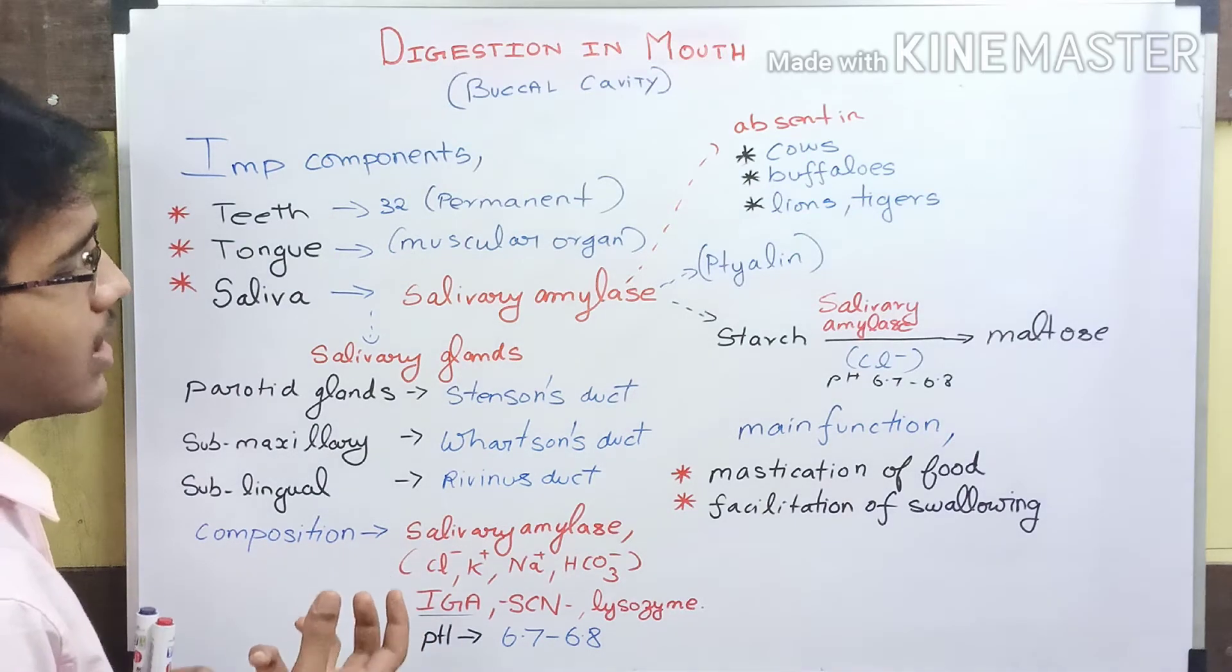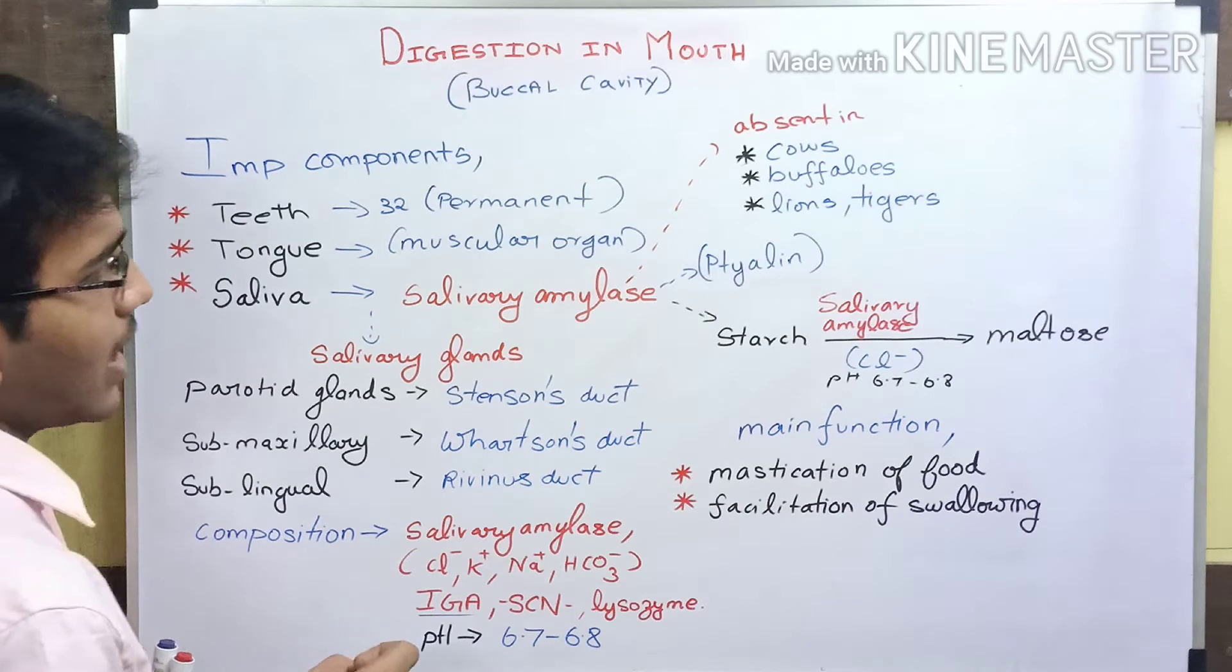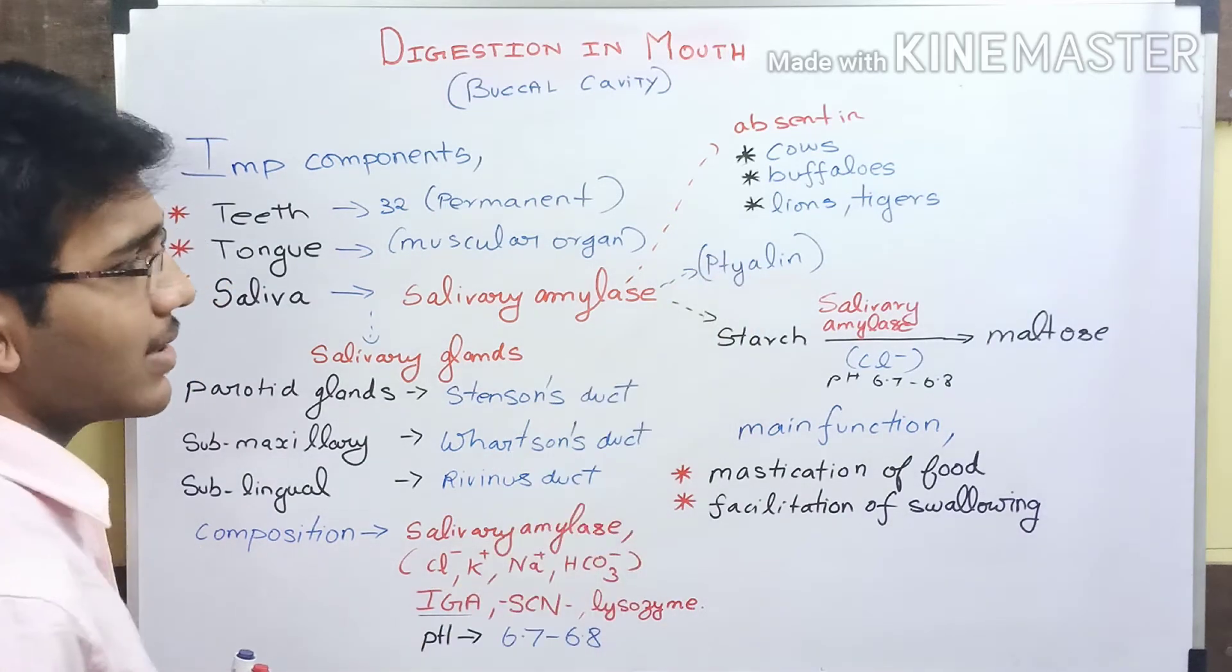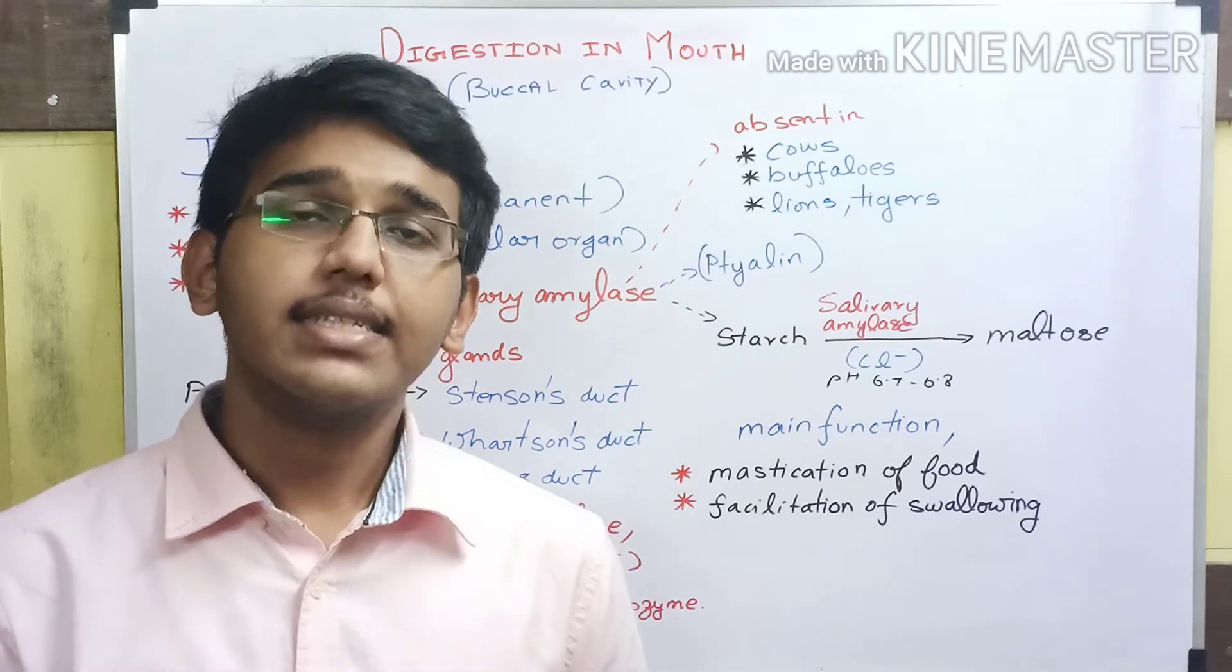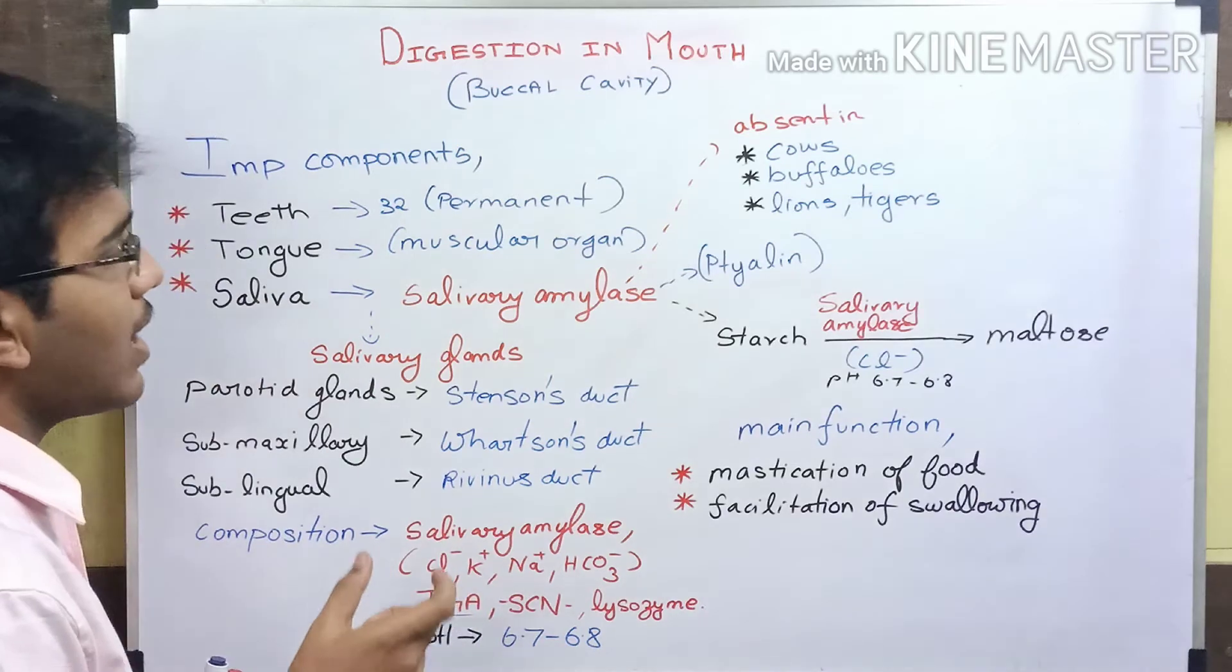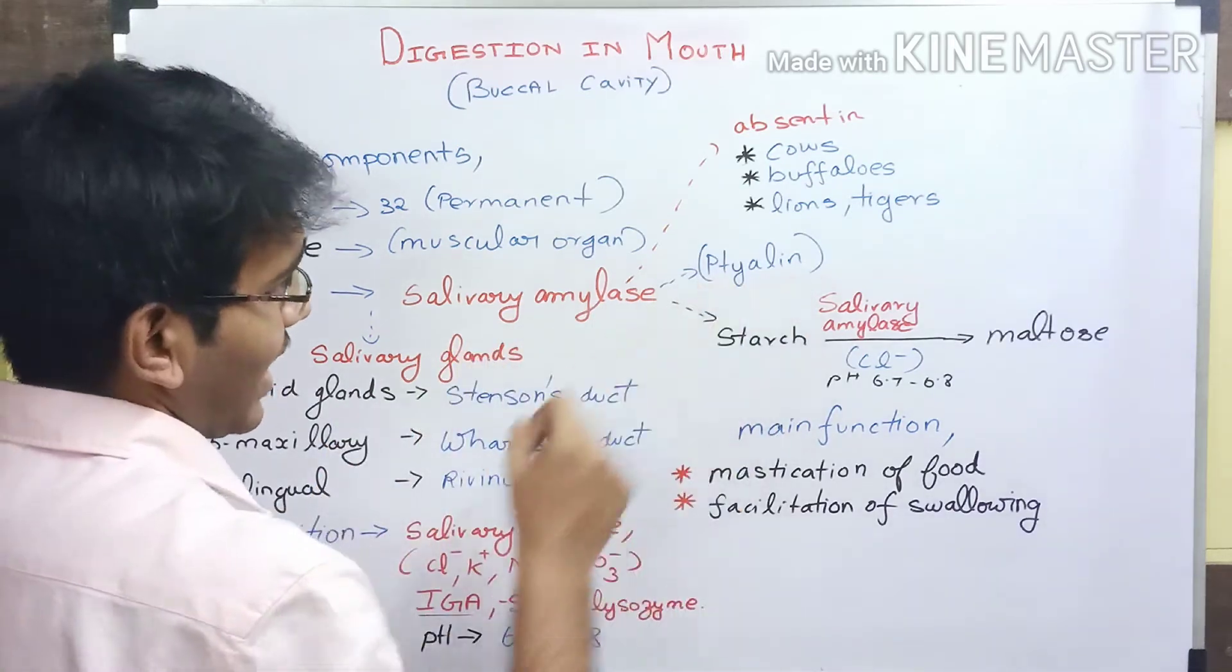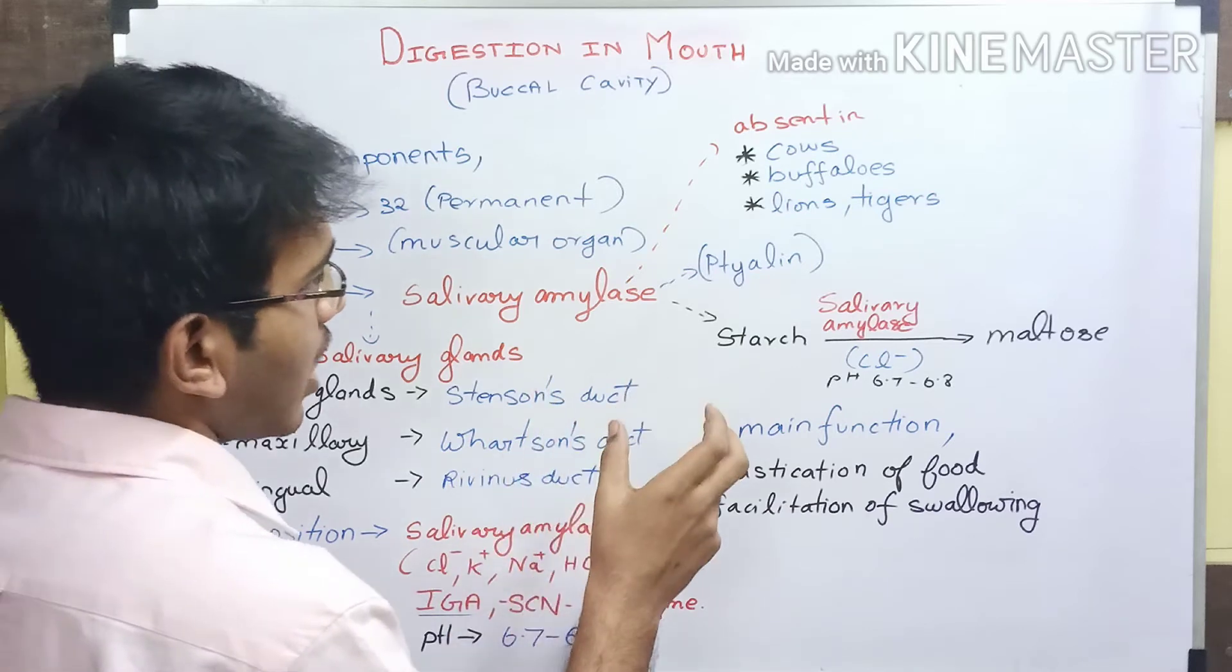Let us discuss the enzyme salivary amylase present in saliva. The salivary amylase enzyme is called ptyalin. Amylase enzyme is also produced in the pancreas, but it is different and is called amylopsin. In saliva, the salivary amylase is called ptyalin.